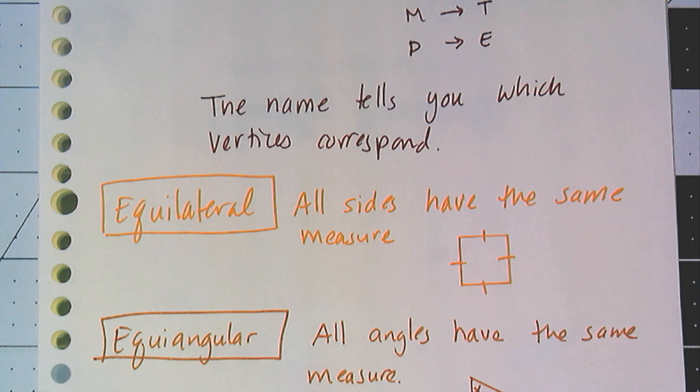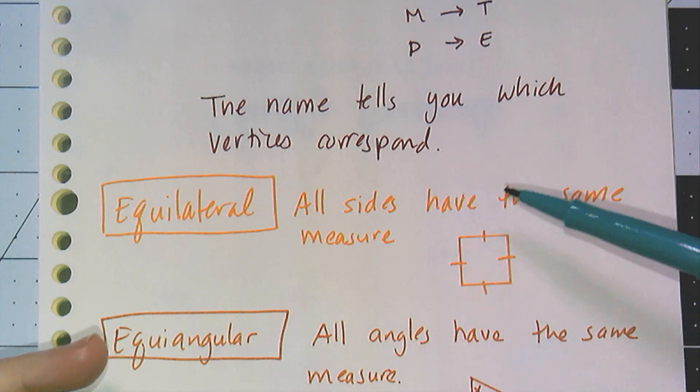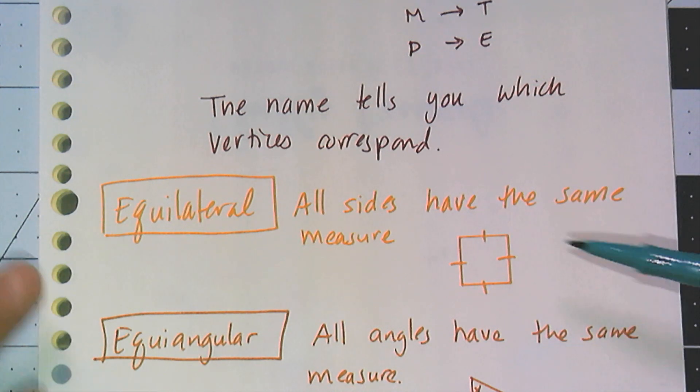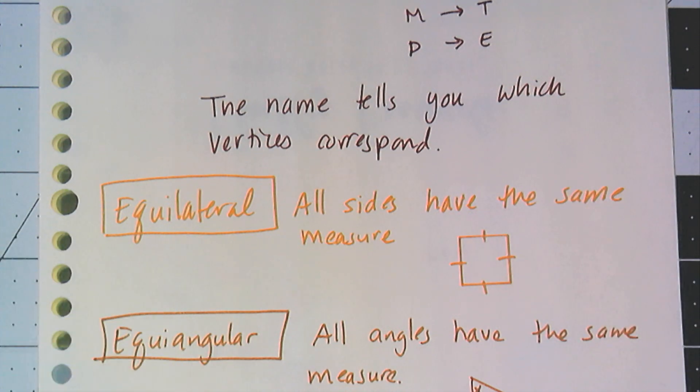We have special types of polygons too, like we have special types of angles. We have the equilateral polygon that says all sides have the same measure. The way I would draw that is I would draw my polygon and use tick marks to show that the sides are equal.